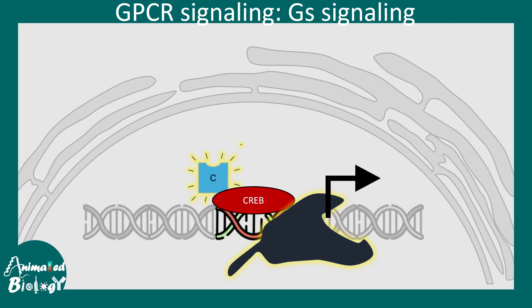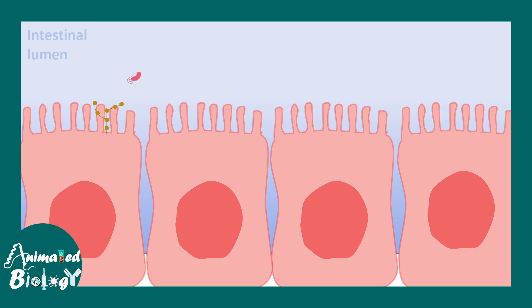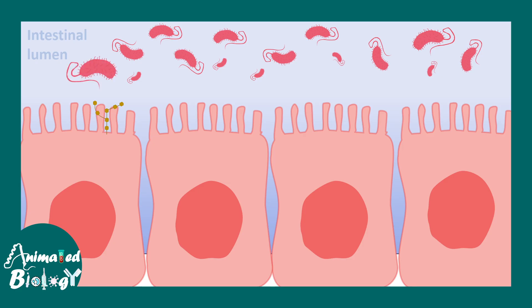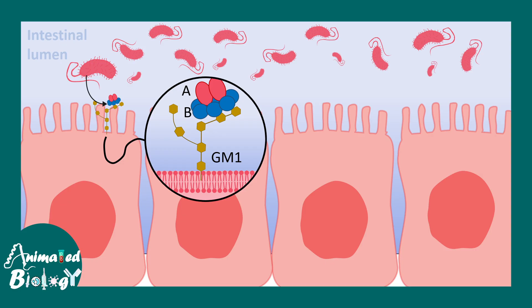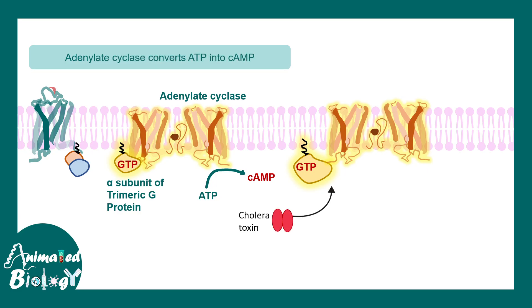Cyclic AMP is also important from a pathological context. In cholera, toxins are released into the cell that modify the G proteins — specifically, cholera toxin ADP-ribosylates the G protein. This locks the G protein into an active configuration, which activates adenylate cyclase for a prolonged period.